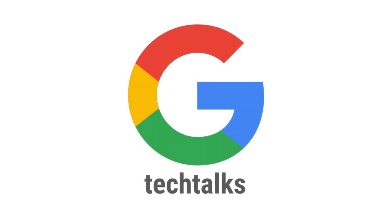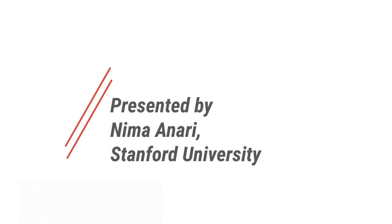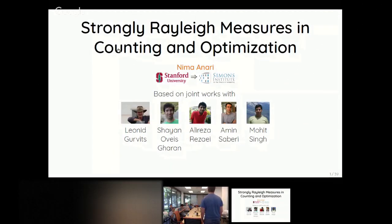Paula Fauchtovsky introduces Nima, a PhD student at Berkeley now at Stanford, who works on approximation algorithms, algorithmic game theory, and graph theory. Today's talk is about strongly Rayleigh measures, a family of discrete measures that capture negative dependence. We will learn what they are and see some applications.